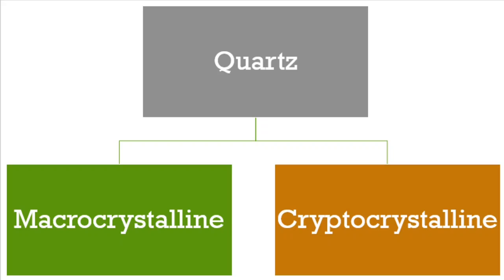An important factor is that these aggregates cannot be seen even with an optical microscope. When compared with microcrystalline or cryptocrystalline, macrocrystalline has massive crystalline structures. So depending on its crystal structure — very small aggregates or massive crystals — quartz can be divided as microcrystalline/cryptocrystalline or macrocrystalline.